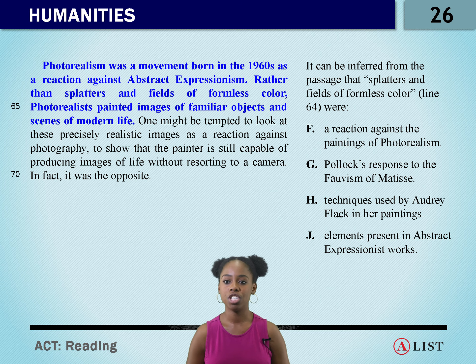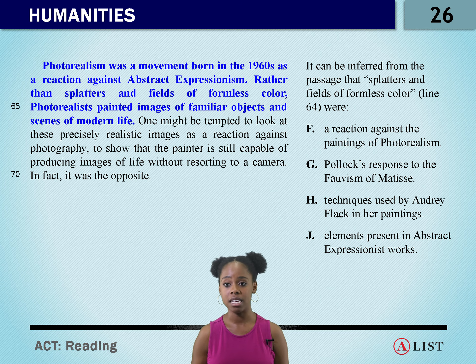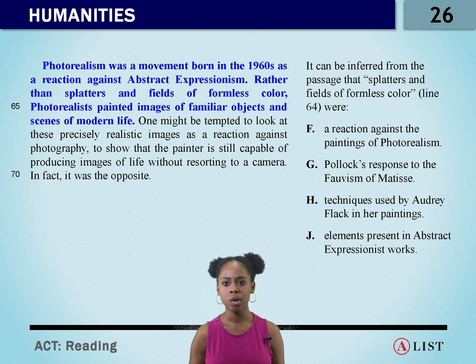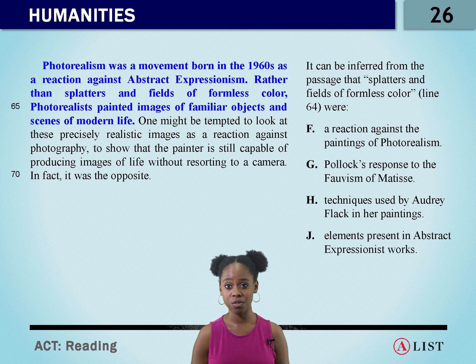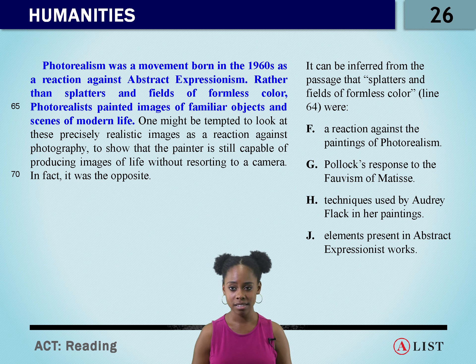Let's look at G: Pollock's response to the Fauvism of Matisse. That's kind of random — we don't see Pollock and we don't see Fauvism of Matisse in those first two sentences. So let's move on.